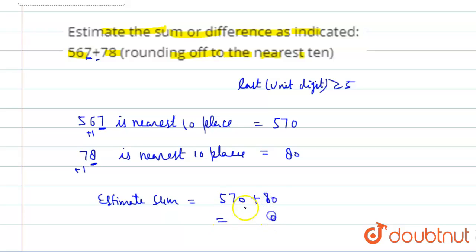This will be equal to 0, 7 plus 8, 15, 5, 6. This is our answer.